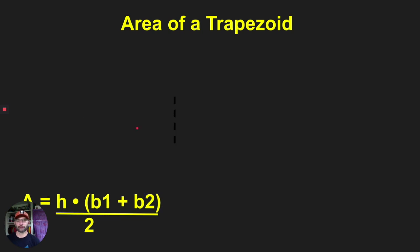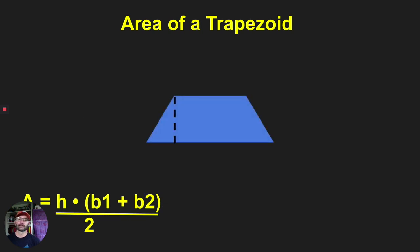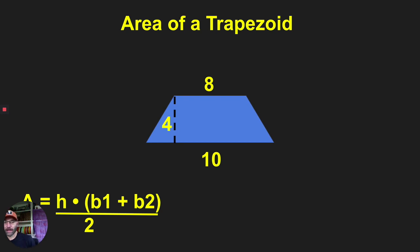Let's try more examples. Here's another trapezoid: one base is eight, the other base is ten, and the height is four. See if you can figure it out using the formula: area equals height times the quantity base one plus base two, divided by two.